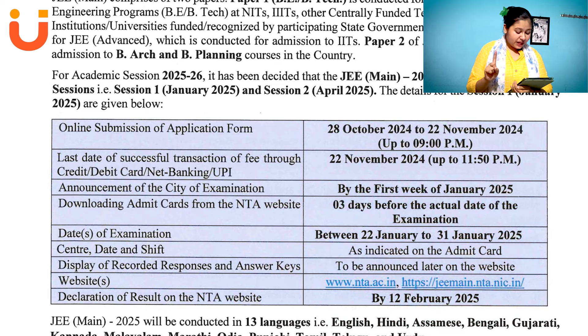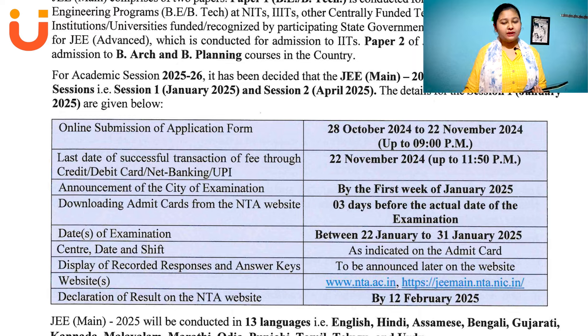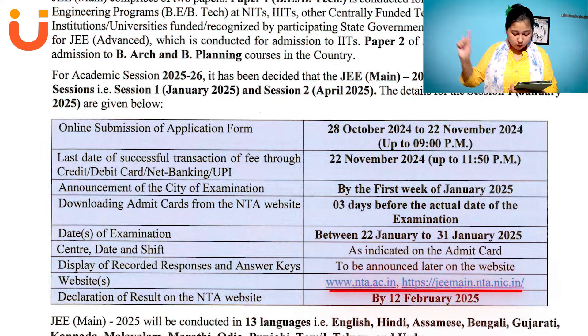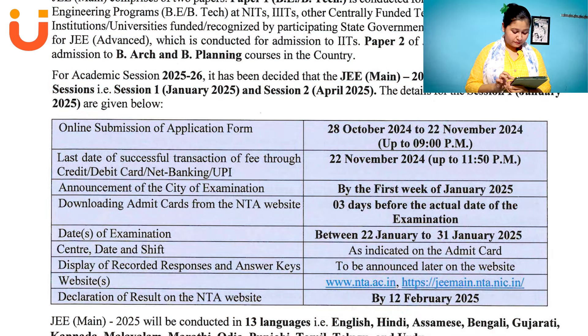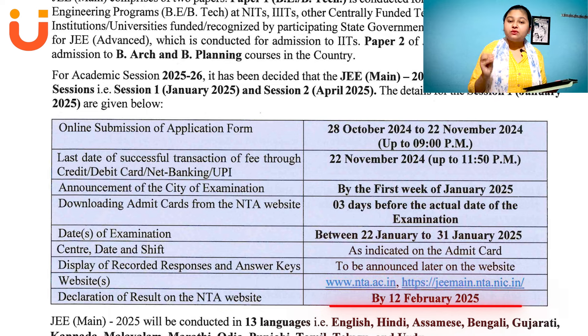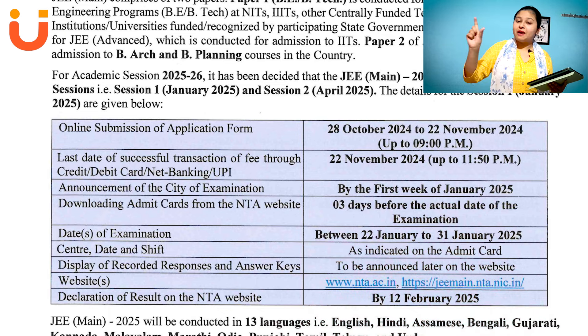Your center, date, and shift will be indicated on the admit card. Display of recorded responses and answer keys will be announced later on the website — sometime after the exam your answer key will be available on the website so you can cross-check your answers and calculate your score. Declaration of result on NTA website — JMains first session result will be published by 12th February 2025.